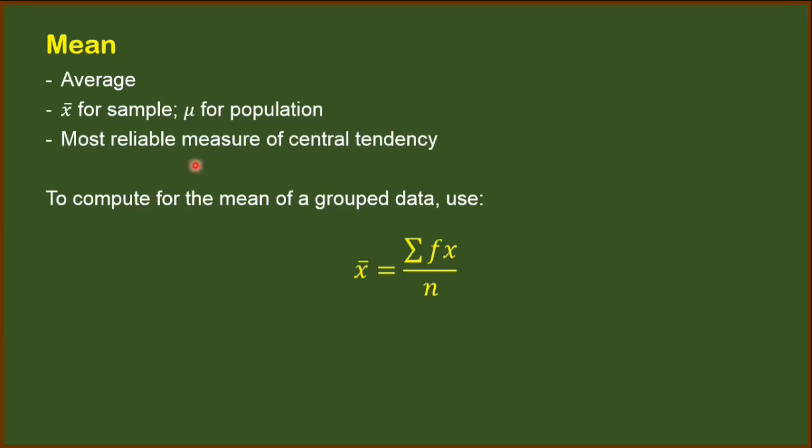summation of f times x over n. Where that summation of f times x is the sum of the product of the class mark and the frequency of all classes.